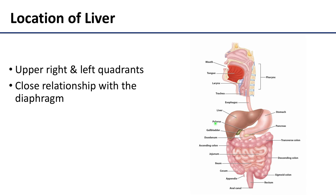That's why that right dome of the diaphragm is more superiorly placed. Functionally, the liver performs a wide range of metabolic activities required for homeostasis, nutrition, immune defense, and particularly important in terms of removal and breakdown of toxic or potentially toxic materials in the blood.